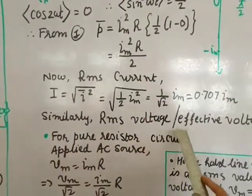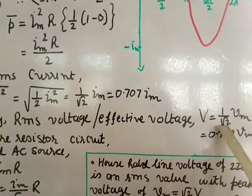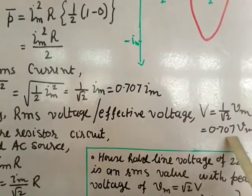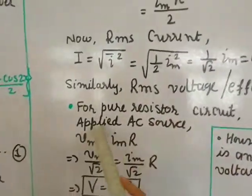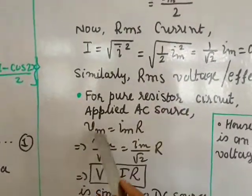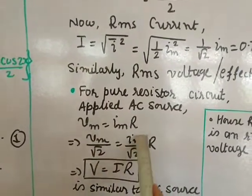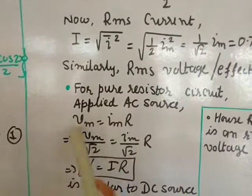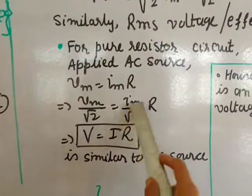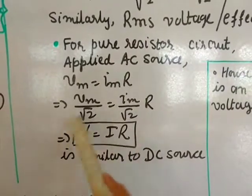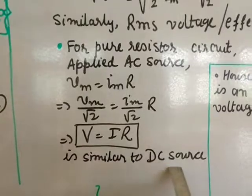Similarly, RMS voltage (effective voltage) is V_RMS = V_m/√2 = 0.707 · V_m. For a pure resistor circuit with AC source, V_m = I_m · R. Dividing both sides by √2: V_m/√2 = (I_m/√2) · R, which gives V_RMS = I_RMS · R. This is analogous to Ohm's law, so we can treat it similarly to a DC source.